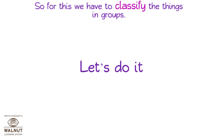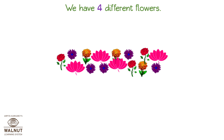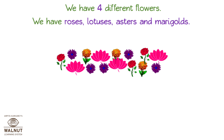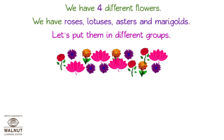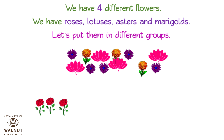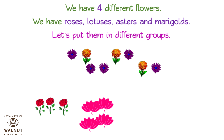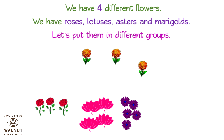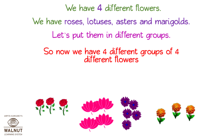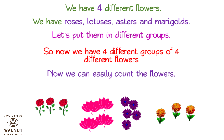Let's do it. We have four different flowers — roses, lotuses, asters, and marigolds. Let's put them in different groups. First, we put all roses together. Then, we put all lotuses together. Then, we put all asters together. And finally, we put all marigolds together. So now we have four different groups of four different flowers, and we can easily count the flowers.